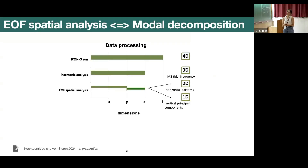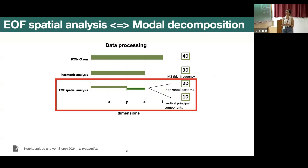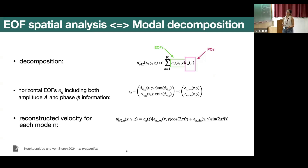We propose a new modal decomposition method based on EOF spatial analysis. After the run and harmonic analysis, the next step is to decompose the three-dimensional data into two-dimensional EOF patterns and one-dimensional vertical principal components. We decompose up to around mode 10, with EOFs depending on x and y and the corresponding components depending on depth. The EOFs include information about both the amplitude and the phase of the wave from the harmonic analysis.